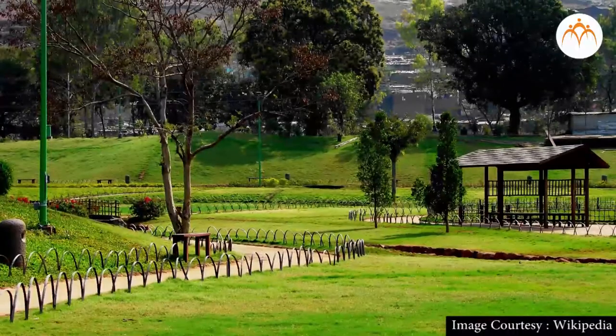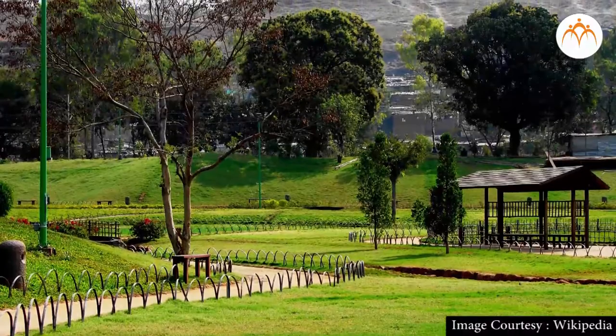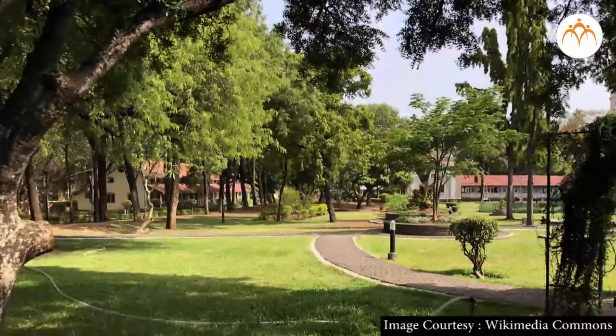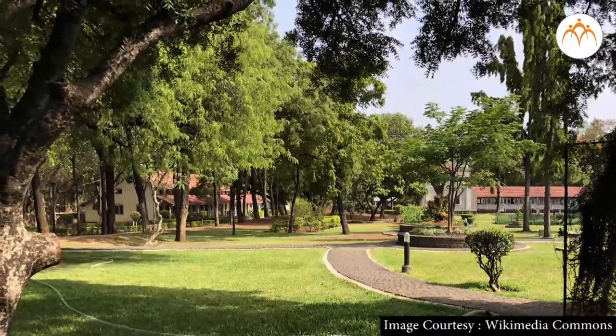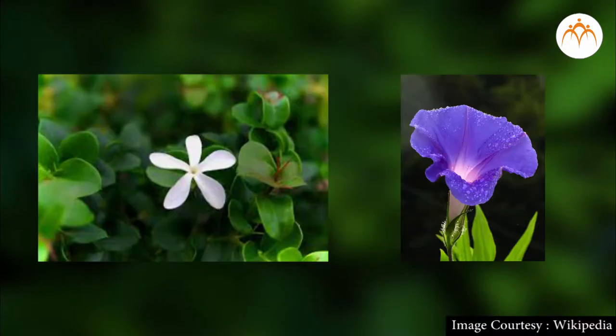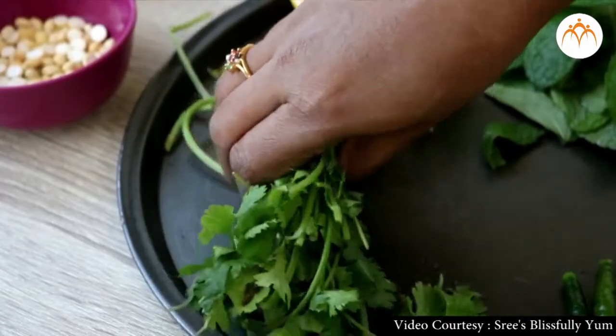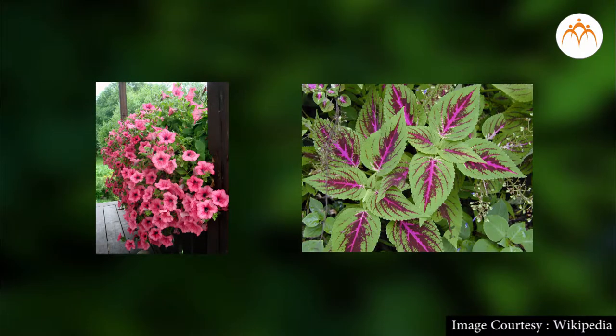Hello students, have you ever tried listing out types of plants in your garden or in your society? Take a pen and paper and start listing out the plants around you. You may know the names of some of them. Check whether they are bearing fruits and flowers, and what is the shape of the leaves. You will realize that many of the plants around have some medicinal use, some of them are used in cooking, and some are ornamental plants.